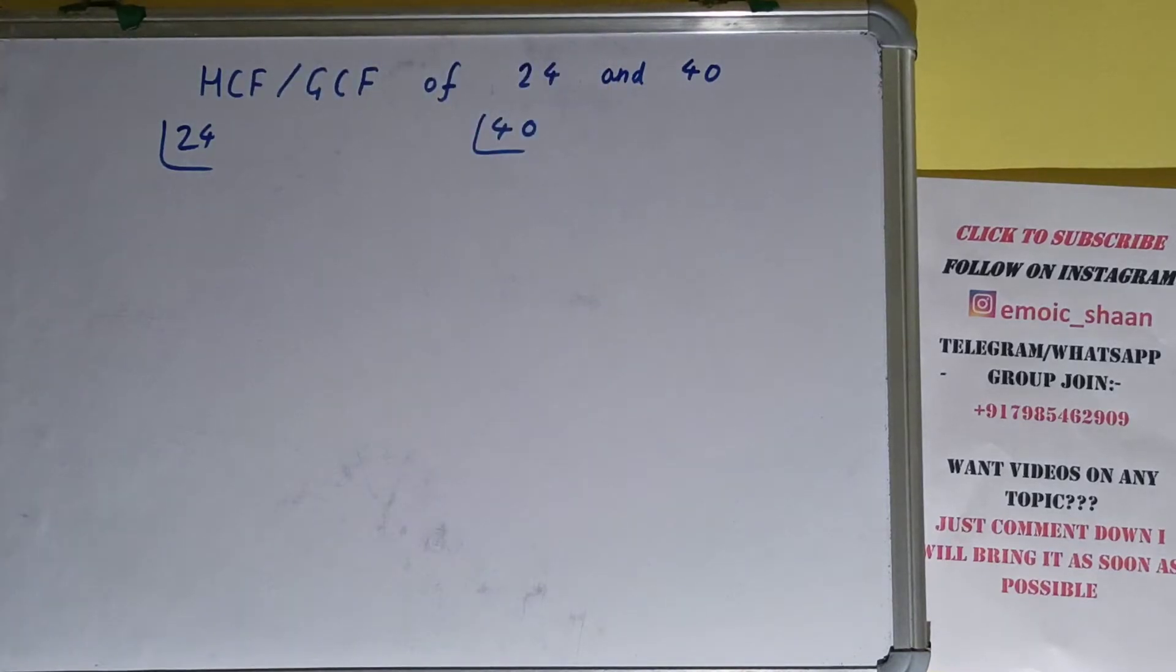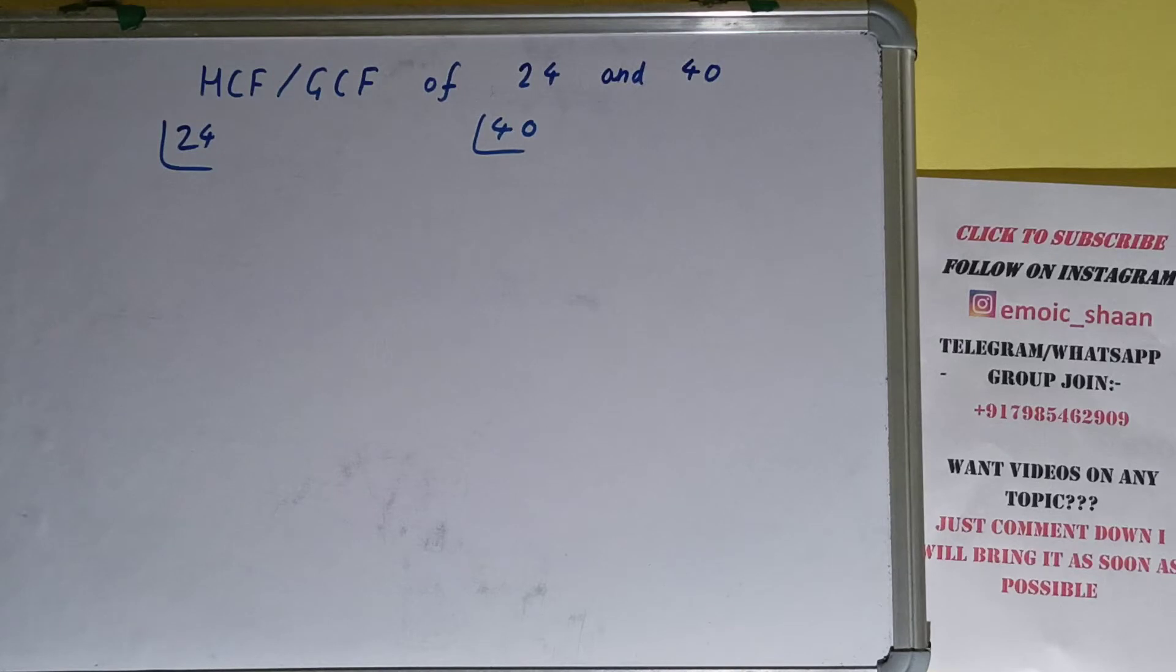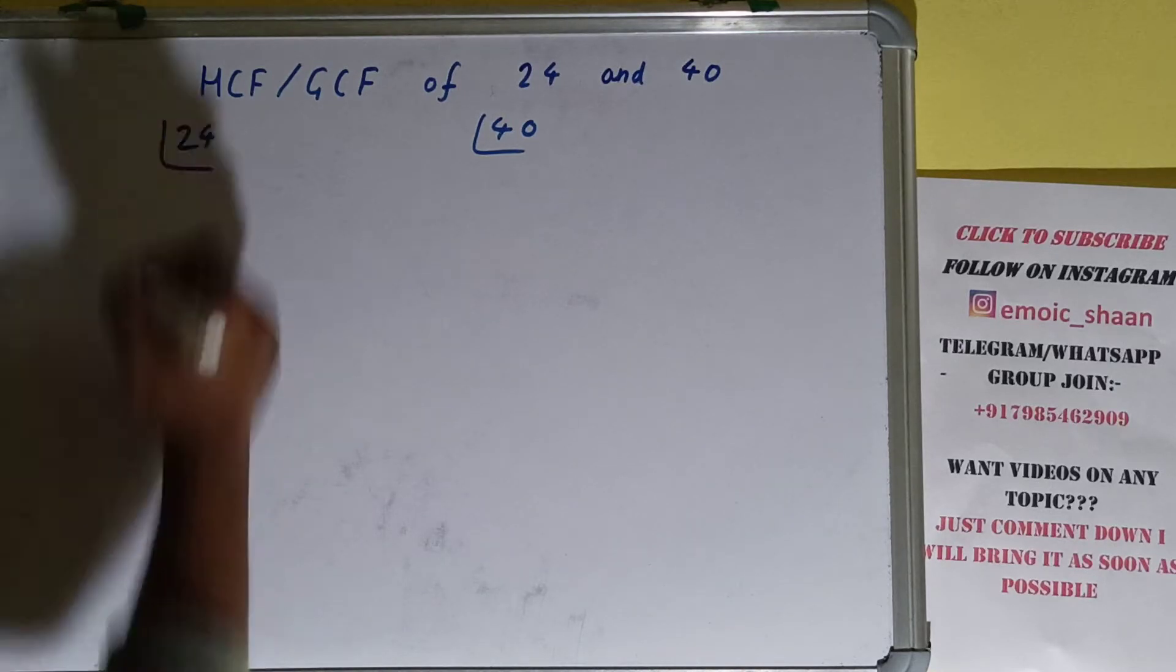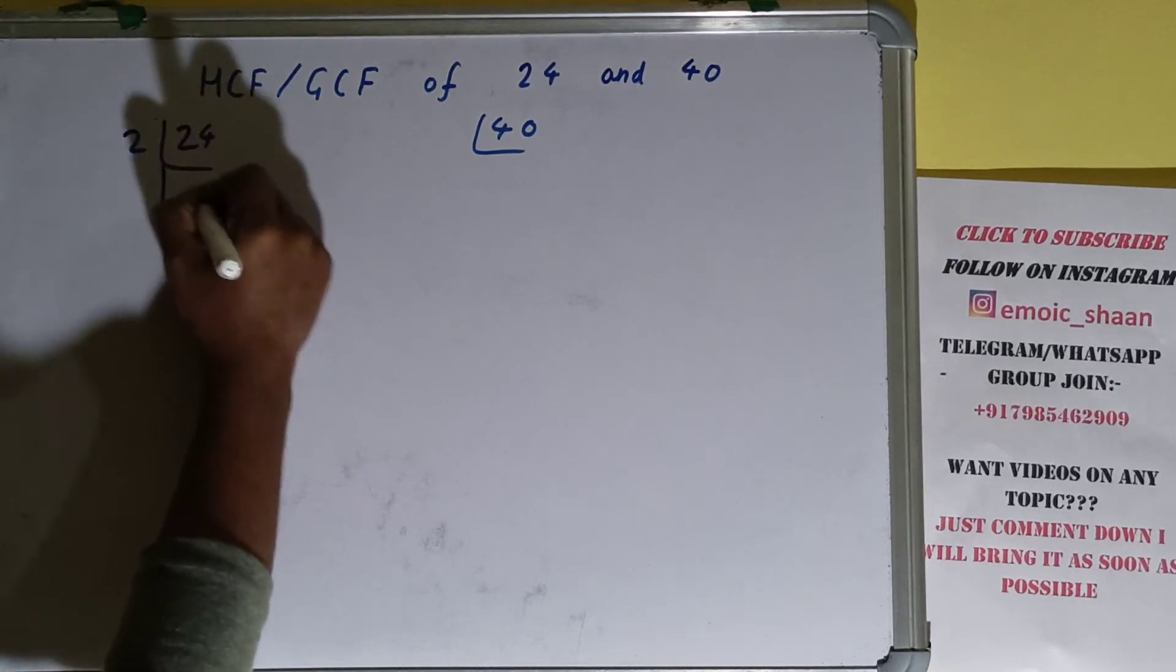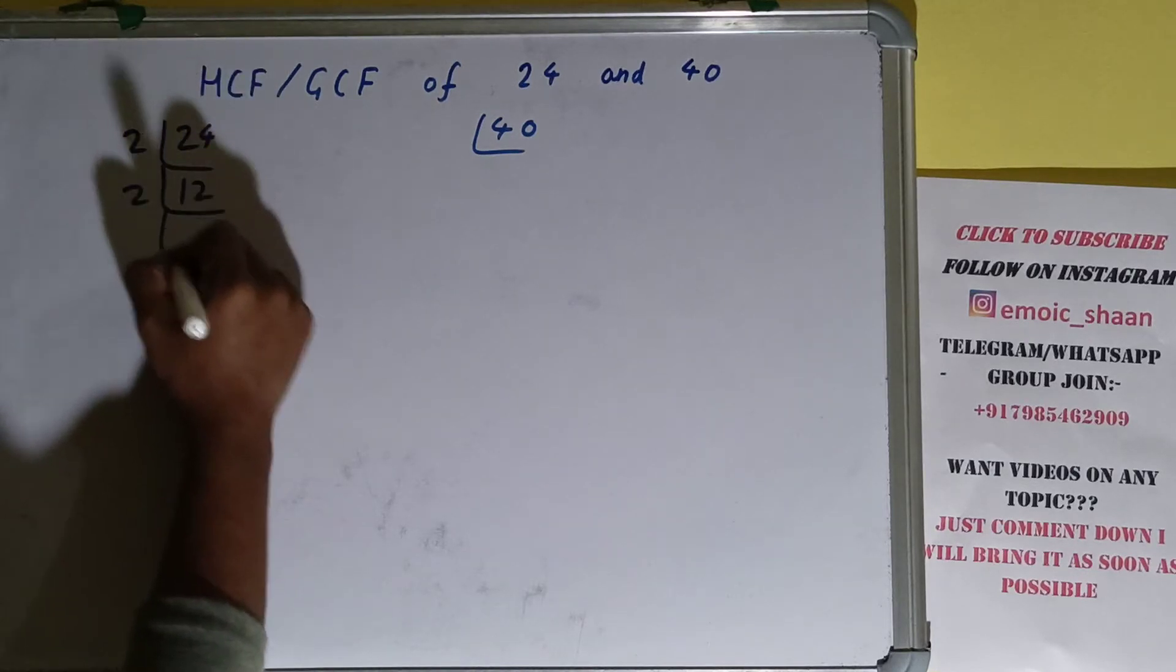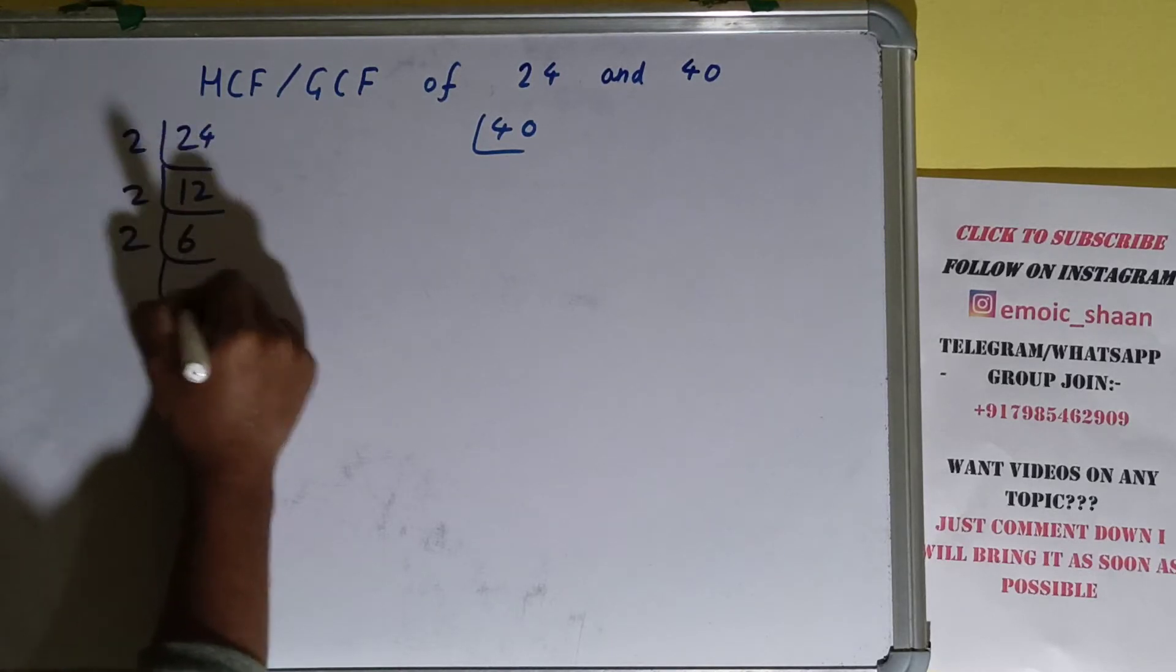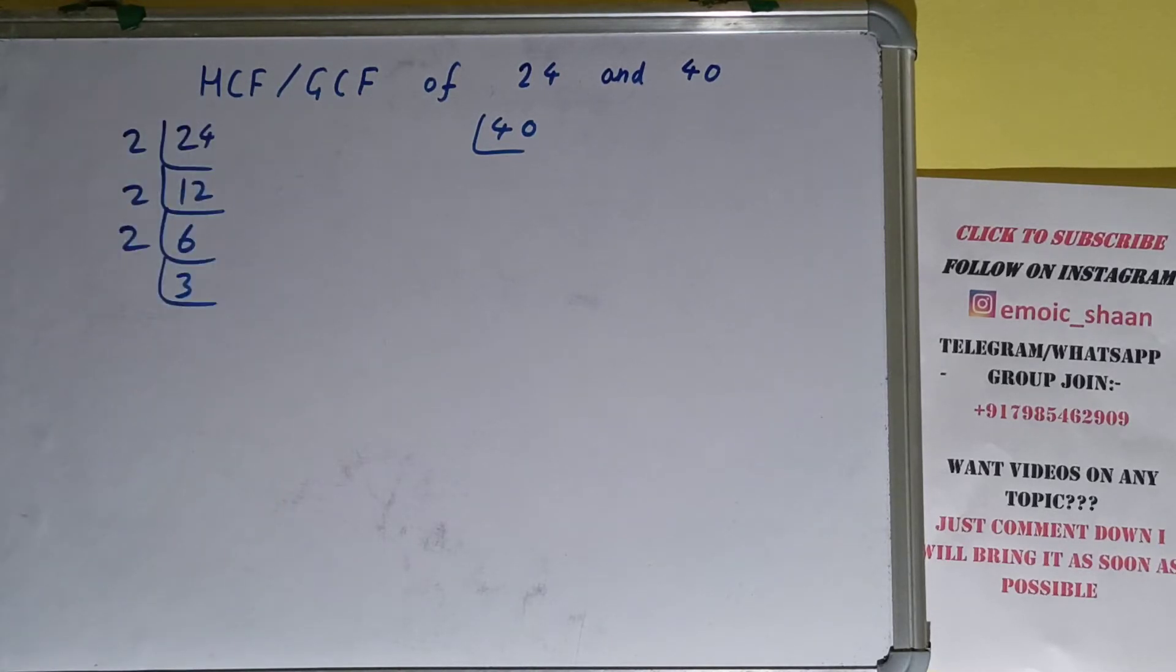We'll start with the number 24 and check with the lowest prime number, which is 2. Is 24 divisible by 2? Yes it is, and we'll have 12. Is 12 divisible by 2? Yes, and we'll have 6. Is 6 divisible by 2? Yes, and we'll have 3. Is 3 divisible by 2? No, 3 is a prime number, so it is only divisible by itself and we'll have 1.